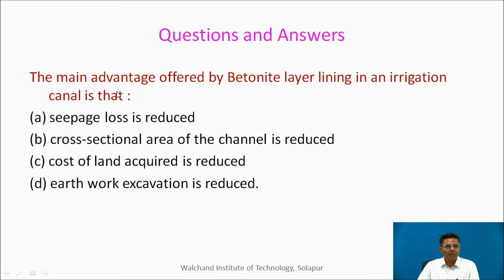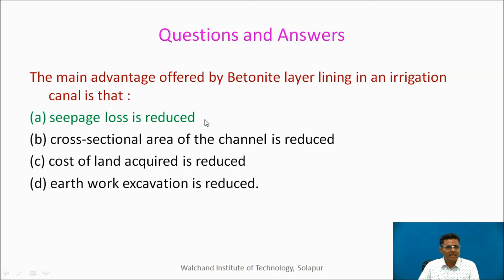Practice question: The main advantage offered by bentonite layer lining in an irrigation canal — bentonite being a clay used as an earth lining — is that: (a) seepage loss is reduced, (b) cross-sectional area of channel is reduced, (c) cross-sectional land acquired is reduced, (d) earthwork excavation is reduced. The correct answer is that seepage loss is reduced due to bentonite layer lining.